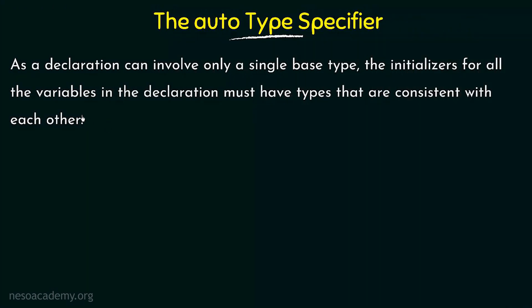As we talk about the auto type specifier, a declaration can involve only a single base type, so the initializers for all the variables in the declaration must have types that are consistent with each other. For example, we can say int a=1, b=2, c=3 with a single base type. However, we cannot say int a=1, b=2.5 because b is an integer and we cannot assign a float or double type to it. The same rule applies with the auto type specifier as well.